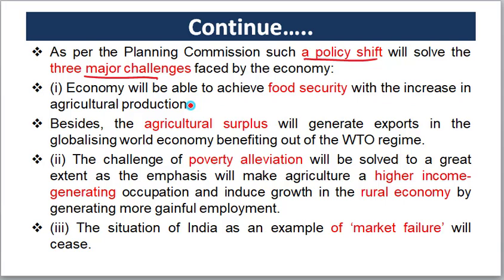The first challenge is food security. India has a huge population, and ensuring food security requires strong agricultural production. The government needed to focus on agriculture to ensure that the country could feed itself. Food security was a primary concern, especially given the scale of India's population and its dependence on agricultural output.